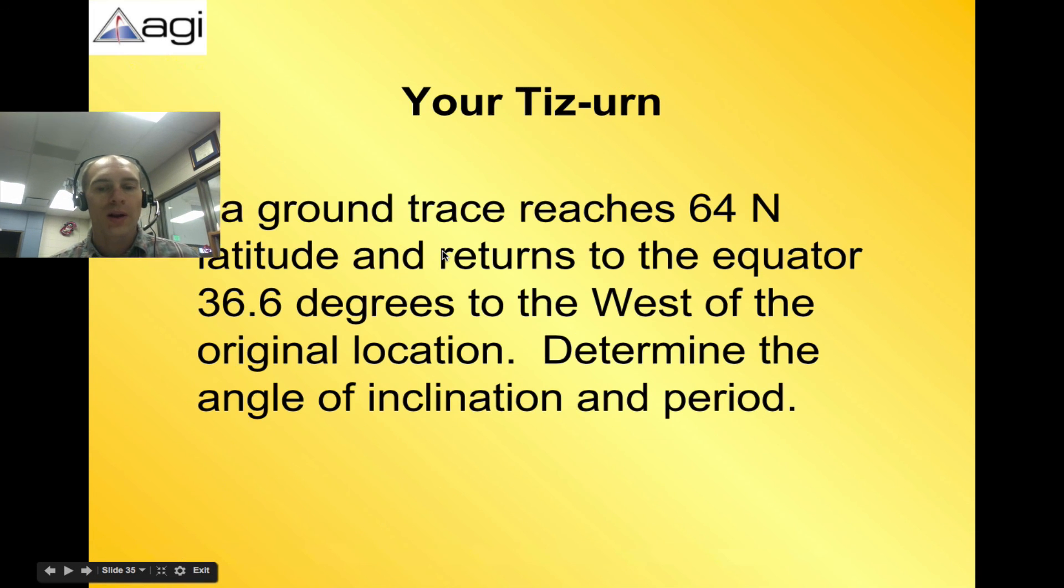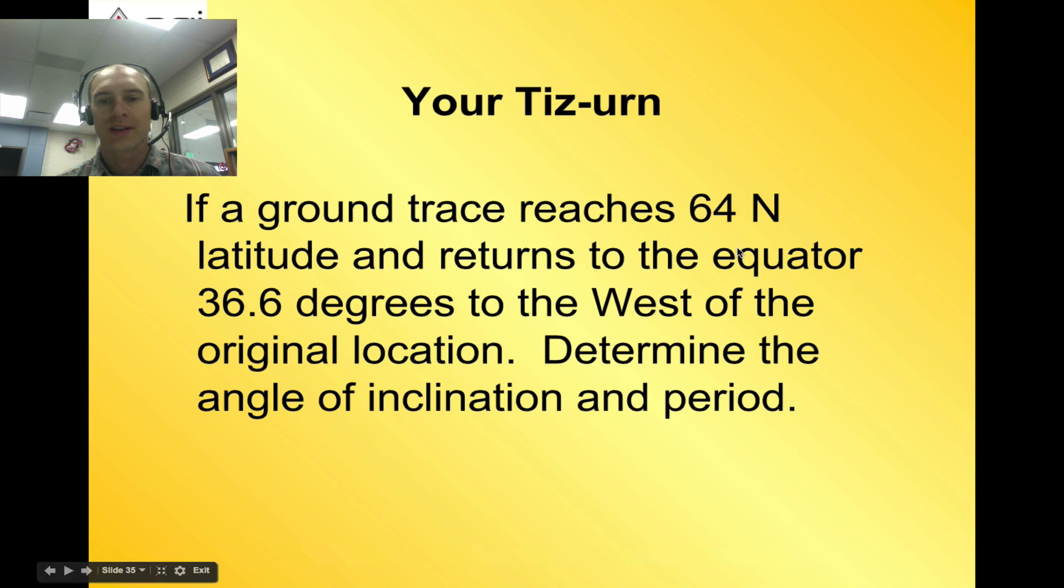So let's move forward. If your ground trace reaches 64 north latitude and returns to the equator 36.6 degrees to the west of the original location, determine the angle of inclination and period. So it's identical to what we just did. Now it is your turn. So pause this and write this out and calculate this and then check your answer. Pause. So we would find out that the angle of inclination is just 64 degrees inclination because it reaches 64 north. The period is 36.6 degrees times 3.99 minutes per degree gives you a value of 146.034 minutes.